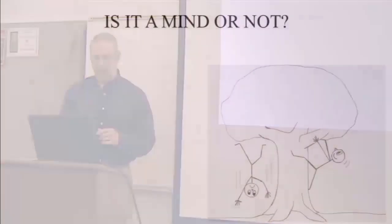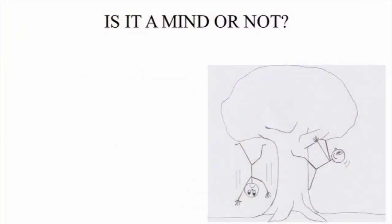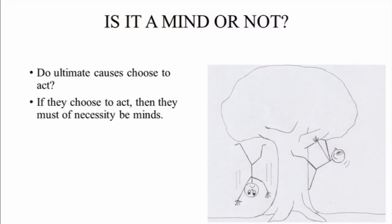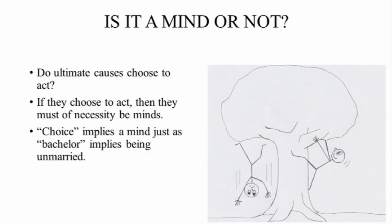More specifically what I mean is, do ultimate causes choose to act? Because if they do choose to act, then they are of necessity minds. Minds are things that choose, right? Choice implies a mind, just as bachelor implies being unmarried.